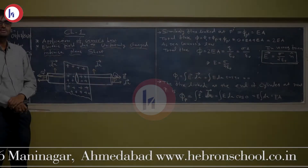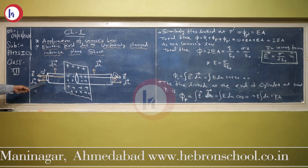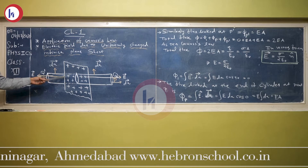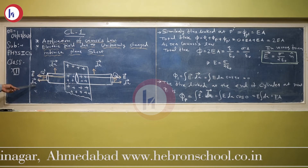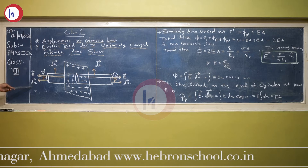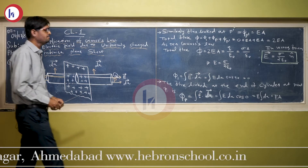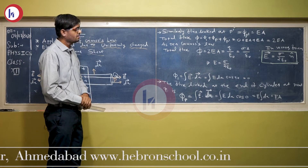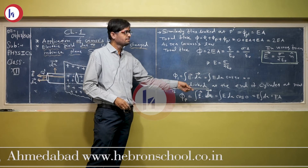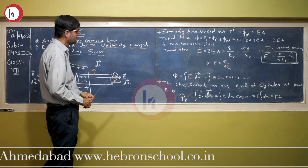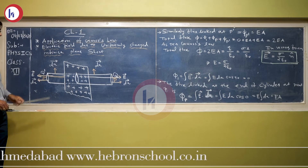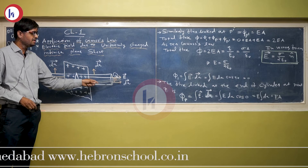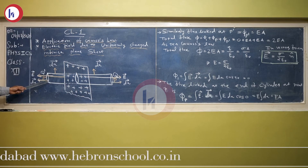Now for the flux at point P dash — you can see the electric field produced by the plane sheet and the area vector are also in the same direction at this end. The angle between them is 0, and similarly, the flux linked at P dash, phi P dash, is also equal to E times A. Just as at point P we get EA, at point P dash we also get EA.